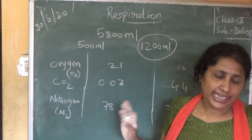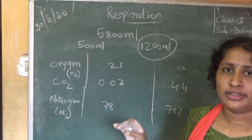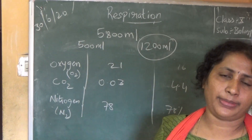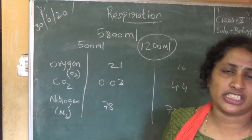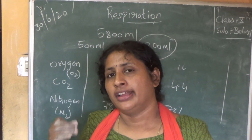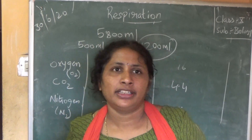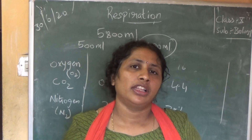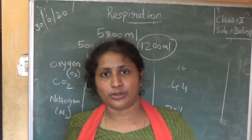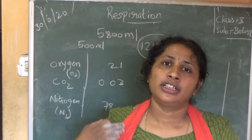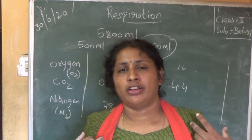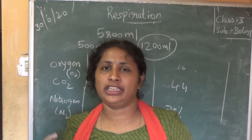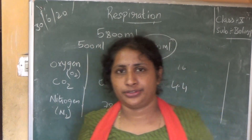This is about gaseous exchange between the alveoli and the blood. In the next class we will see the transport of gases — how blood transports oxygen, how hemoglobin reacts with oxygen, how oxyhemoglobin is formed, and how it is delivered to the cells. Thank you.